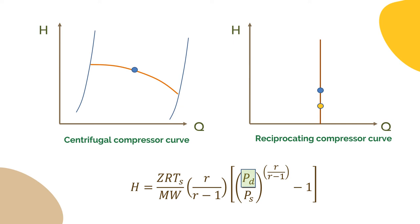So when the suction temperature increases at a constant head, the compressor will give less discharge pressure. While when we have a gas of a higher molecular weight, the compressor will give a higher discharge pressure at a constant head.